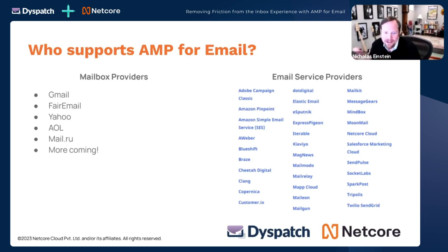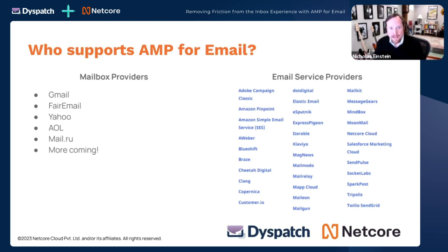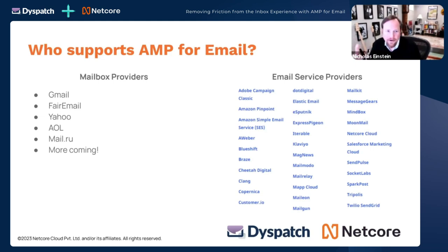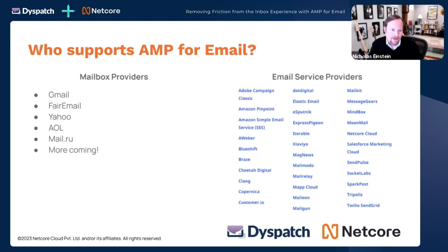How does AMP play in inboxes outside Gmail? On an Android phone you'll have an AMP experience. On the desktop if you're using a Gmail client, web client, Yahoo, or any of these supported providers, you'll get the AMP experience. The real blocker is Apple Mail — if you're on an iPhone using Apple Mail, you won't get AMP, but you will get the fallback experience.